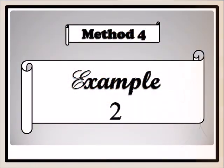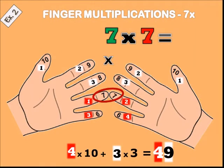Method four, example two: seven times seven. Place the ring fingers of both hands together and count down: one, two, three, four — four times ten is forty. On the left there are three fingers remaining and on the right three fingers, so three times three is nine. Forty plus nine equals forty-nine. Seven times seven is forty-nine.